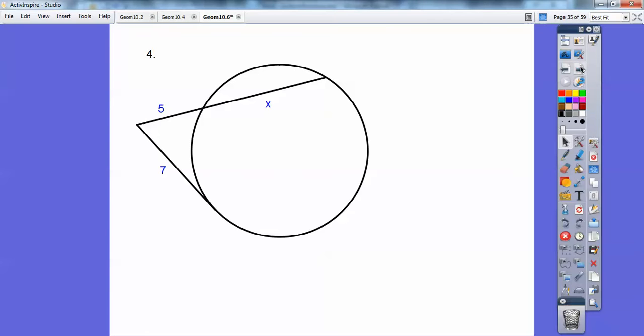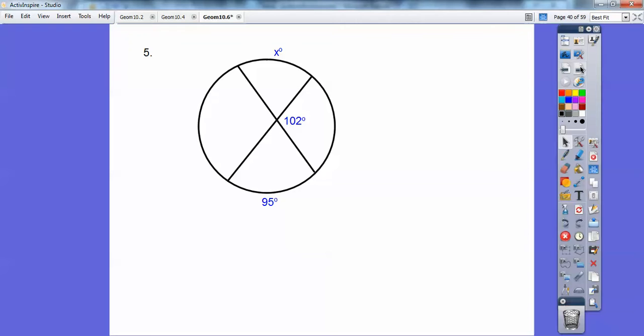Outer times whole equals tangent segment squared. So 5 times 5 plus X equals 49. 25. And then subtract 25 on both sides. You're going to get a fraction on that one. That's okay. So you get 24 fifths. Fractions are good, you guys. Don't be afraid of those.